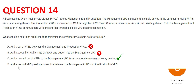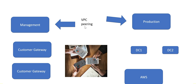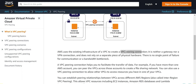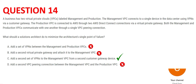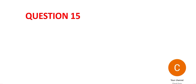Option D says add a second VPC peering connection between the management VPC and production VPC. Just like Option A, this targets VPC peering — but VPC peering connections do not have a single point of failure, so there is no need to duplicate it. D is wrong. Our final answer is Option C.